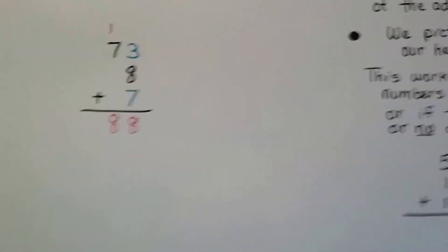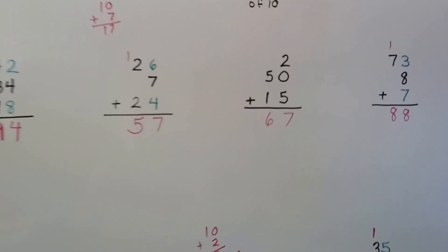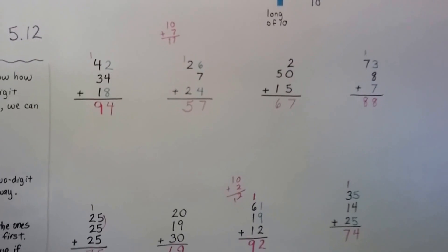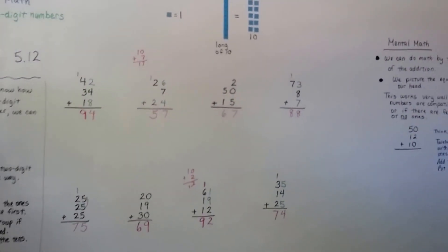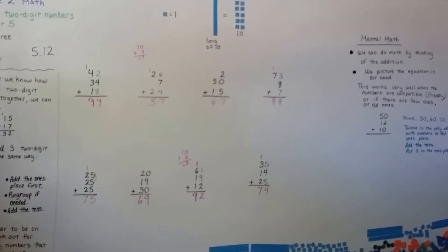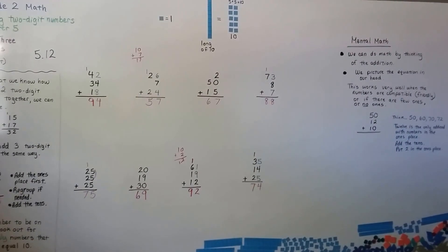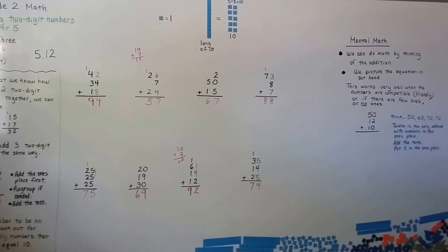All right. So that's adding three two-digit numbers. We're going to continue on and talk about some more problem solving. You're going to get really good at doing word problems. All right? I'll see you next video. Bye.